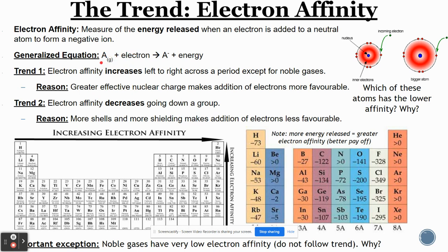So it would look something like this. You have the atom plus electron, and since you're gaining an electron, you're becoming negative — negative one — plus energy. That energy is on the product side, so it means it's being given away, paid to you for the electron you just gave to the atom. More energy released means the atom is happier to receive that electron.